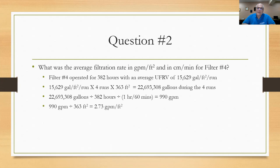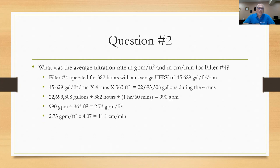Taking 990 gallons per minute ÷ 363 square feet gives a filtration rate for filter number four of 2.73 gallons per minute per square foot. To convert to centimeters per minute, multiply by 4.07, giving 11.1 centimeters per minute.